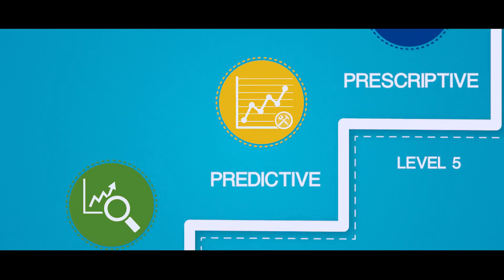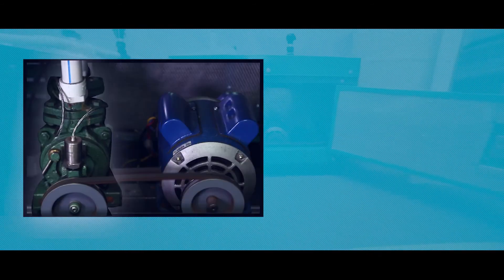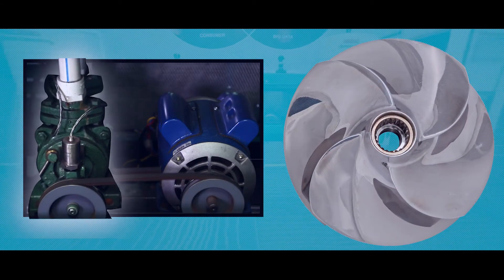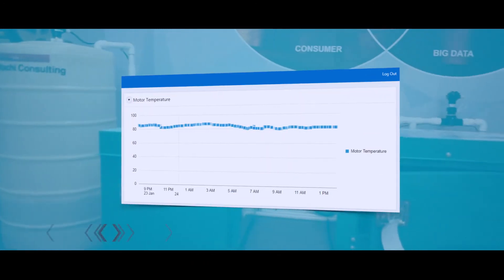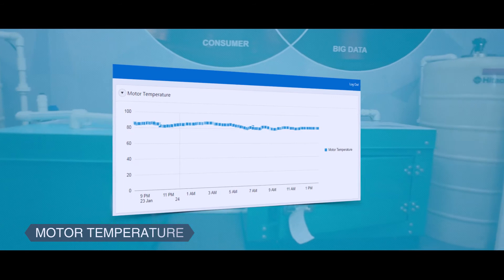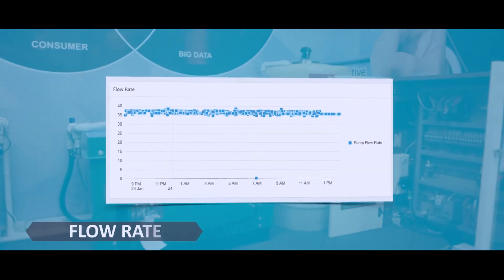The next level is leveraging analytics to move to predictive and prescriptive operations. For equipment such as an impeller, analytics algorithms can correlate various parameters, including temperature, vibration, and flow, to predict failure.